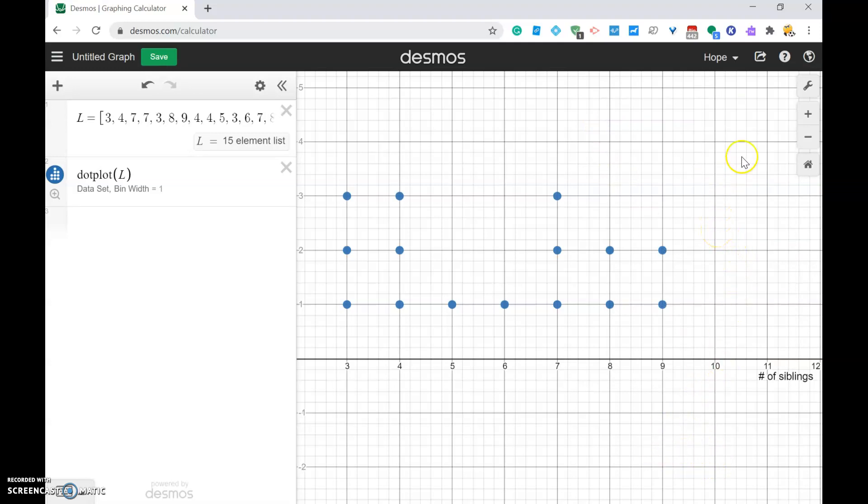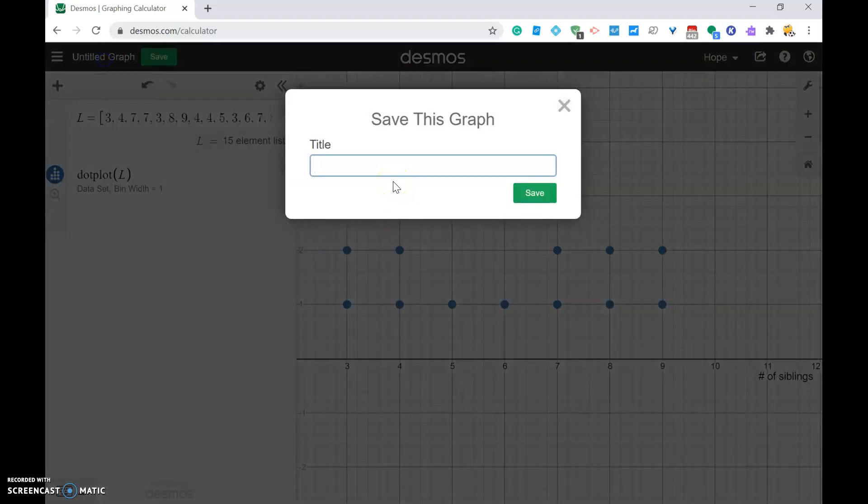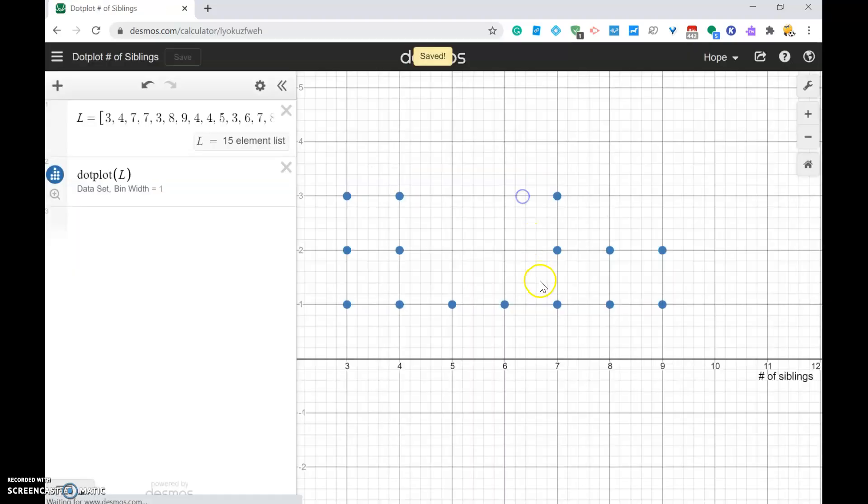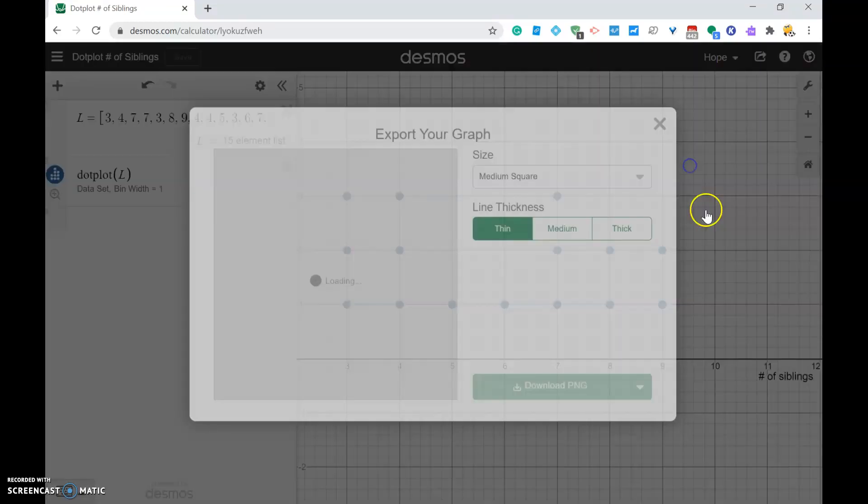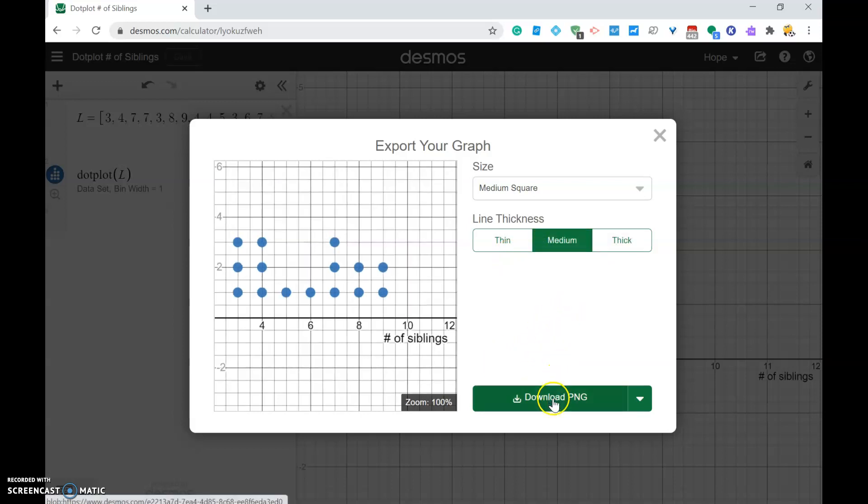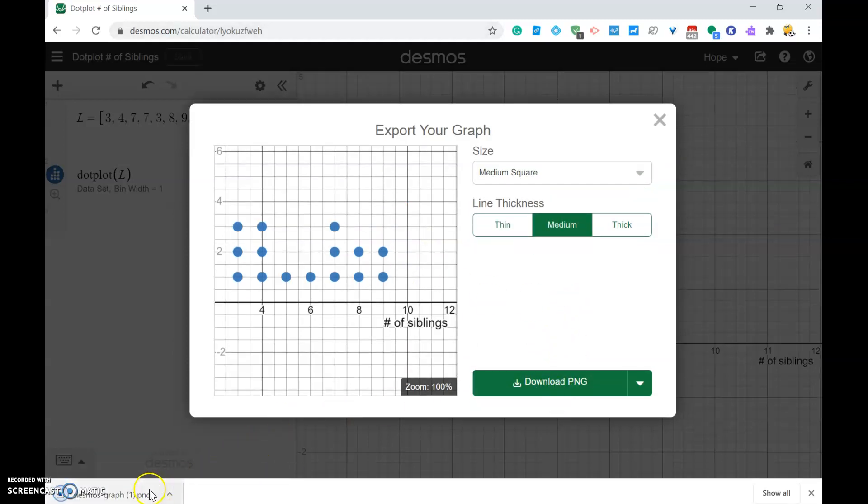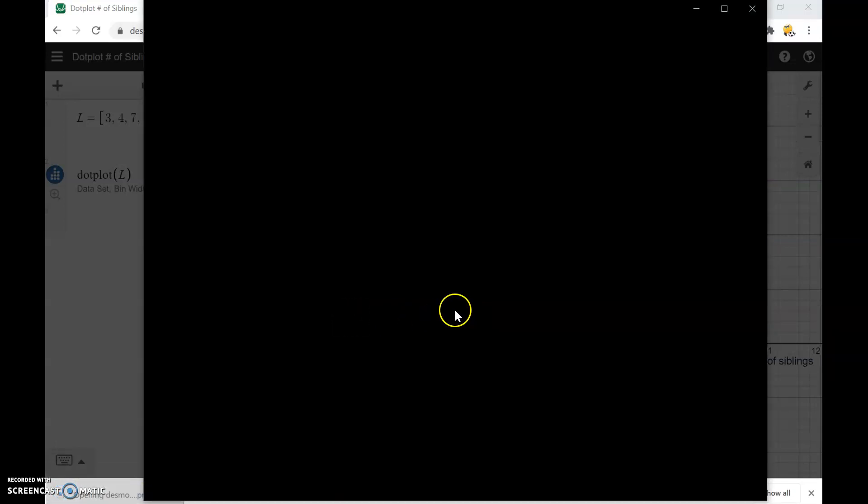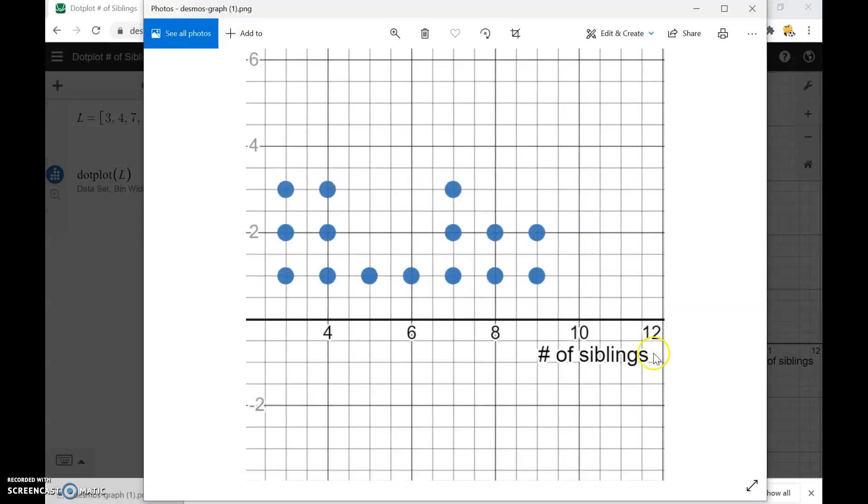Now to download your dot plot, you can title your graph - dot plot number of siblings - save it and click share graph and export image. Here's your image. You can see if you want the dots to be thicker, thickest, medium, however you want it to look. You can either copy and paste your image or download your image and save it, and there you go.